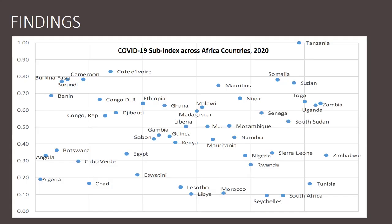This concludes part one of module four, where we looked at the recent vulnerability index calculated for ECA using macro data for comparison purposes. The macro perspective helps compare different African countries not only in terms of overall risk and vulnerability but also in terms of the COVID-19 sub-index. If you have household survey data for your own country, you can conduct a similar analysis adopting a micro perspective as well. This is the end of part one of module four.